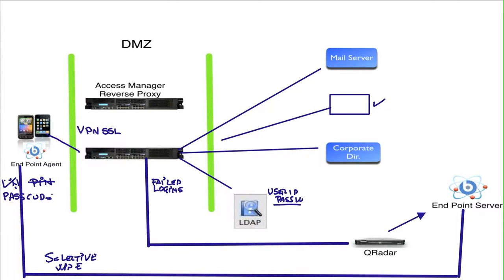The access management appliance can also do device fingerprinting, which is very useful when you want to allow people to bring their own devices. When they come in for the first time, not only do they need to provide a user ID and password, but if we don't recognize that device, we may do risk-based authentication and ask them for additional means of authentication, like a challenge-response question or any other kind of second factor.